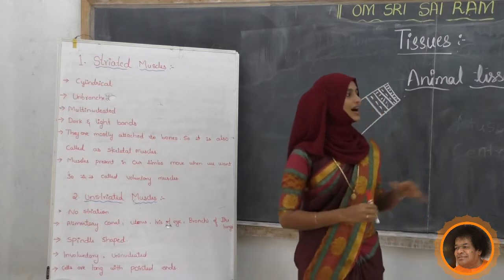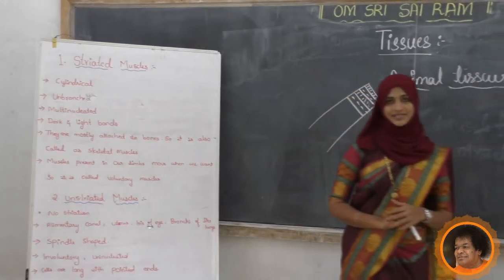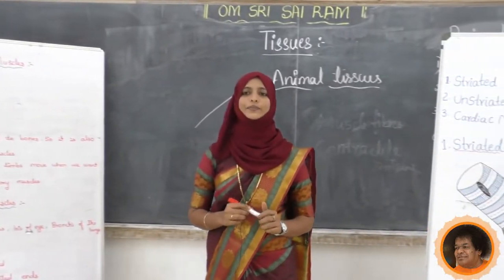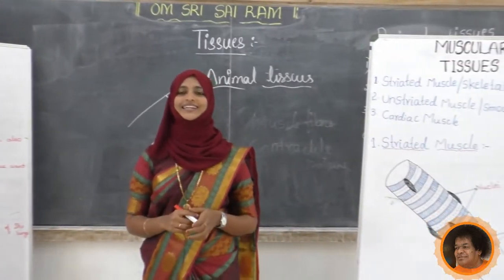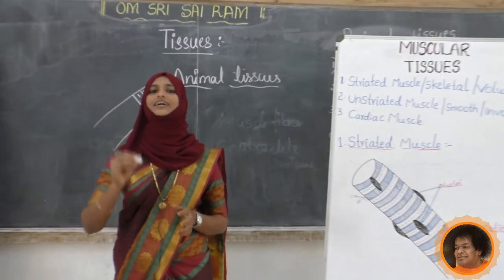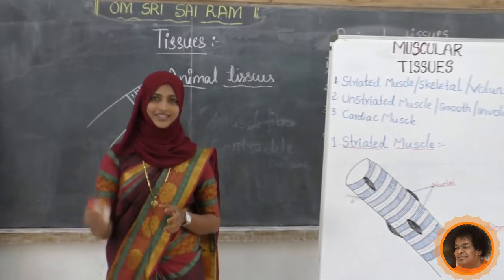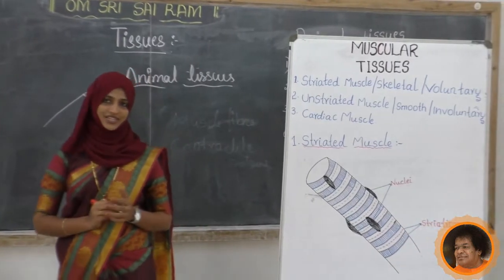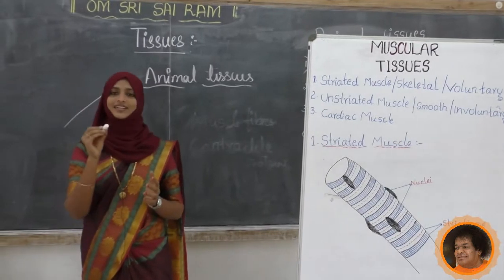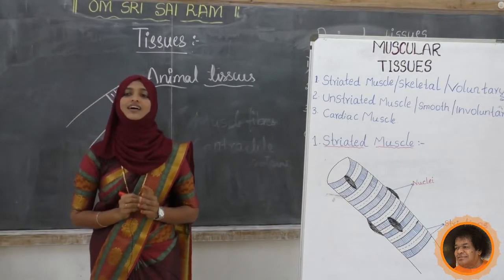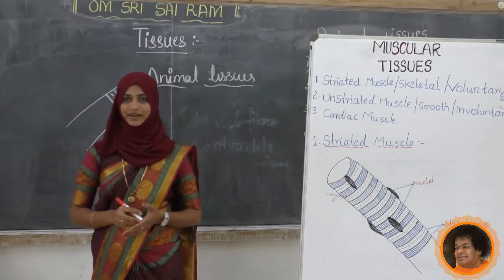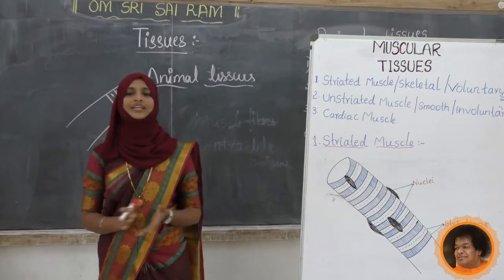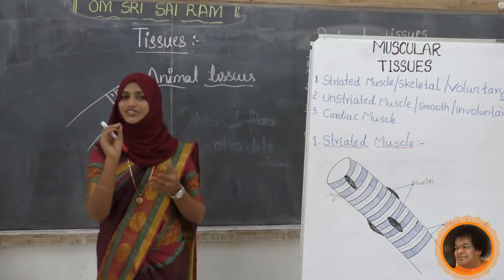Next we will move to unstriated muscles. The name itself indicates: unstriated - it does not have any striations. Striations means dark and light bands, but these muscles lack that. They do not have any striations.